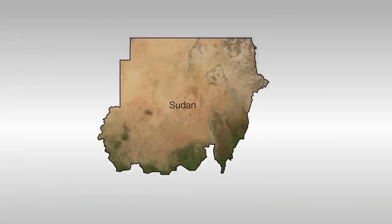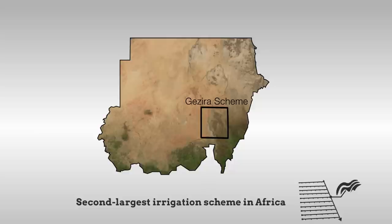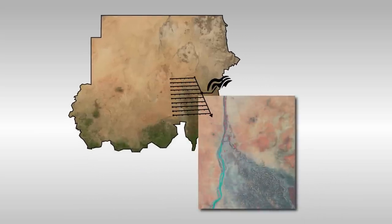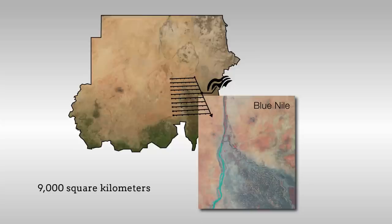In the present study, researchers examined rainfall patterns around Sudan's Jazeera Scheme, the second-largest irrigation scheme in Africa. In the Jazeera Scheme, water is drawn from the Blue Nile to irrigate crops over an area of nearly 9,000 square kilometers.